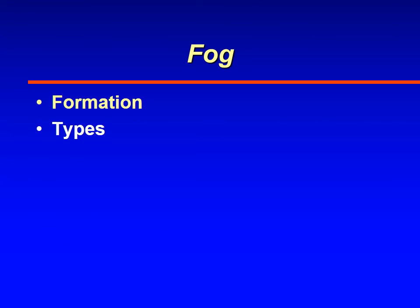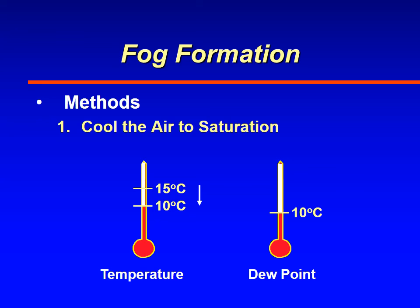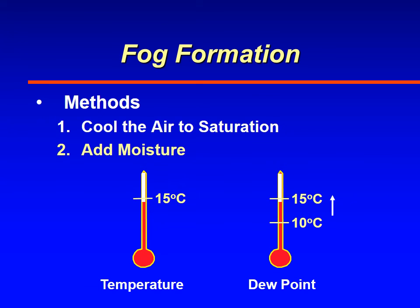Now we're going to talk about the ways that fog forms, and after that we're going to go into the different types of fog. Fogs form by one of two methods: either you can cool the air to saturation where the temperature comes down to meet the dew point, or you can add moisture to the atmosphere. In that case, the dew point goes up to reach the temperature.